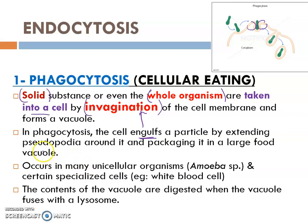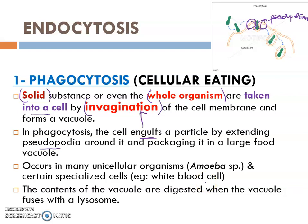Pseudopodia is how the invagination forms. Phagocytosis can occur in many cellular organisms such as amoeba and also certain cells, which are white blood cells. For example, in the immune response, specifically the macrophage, it will kill a bacterium by phagocytosis.